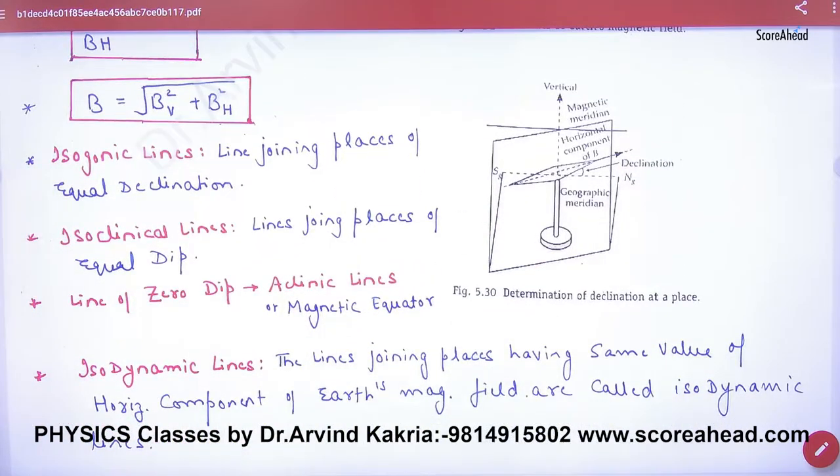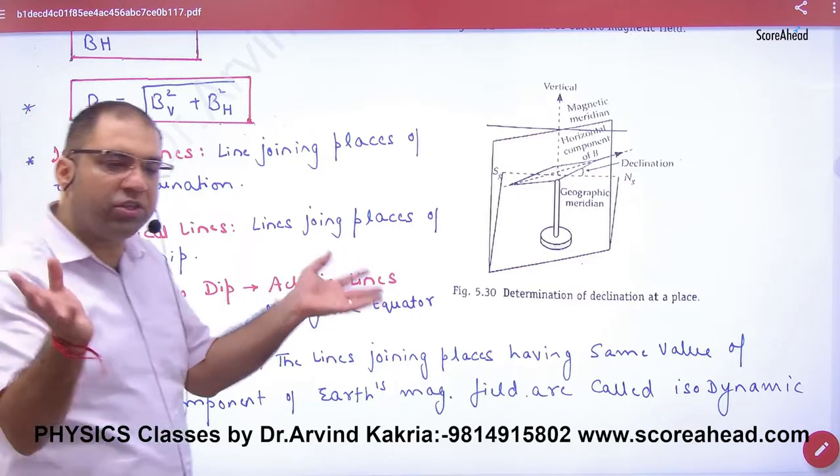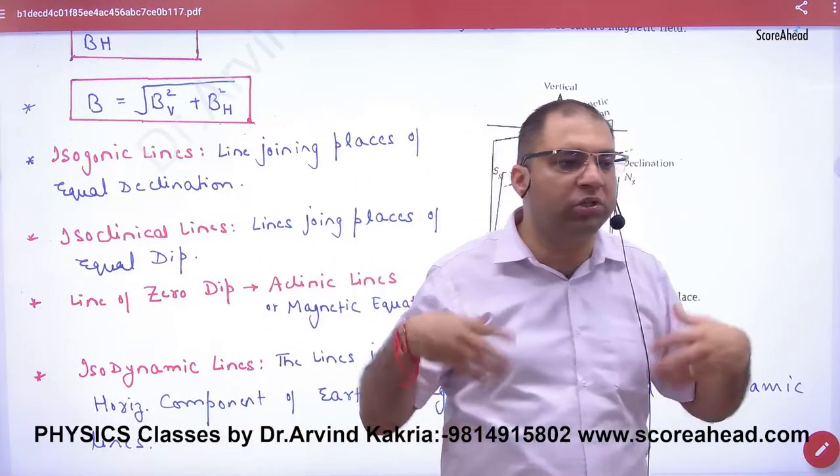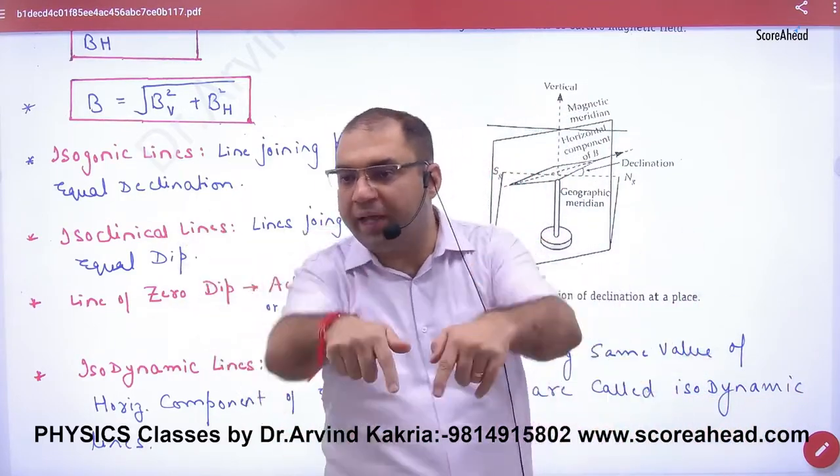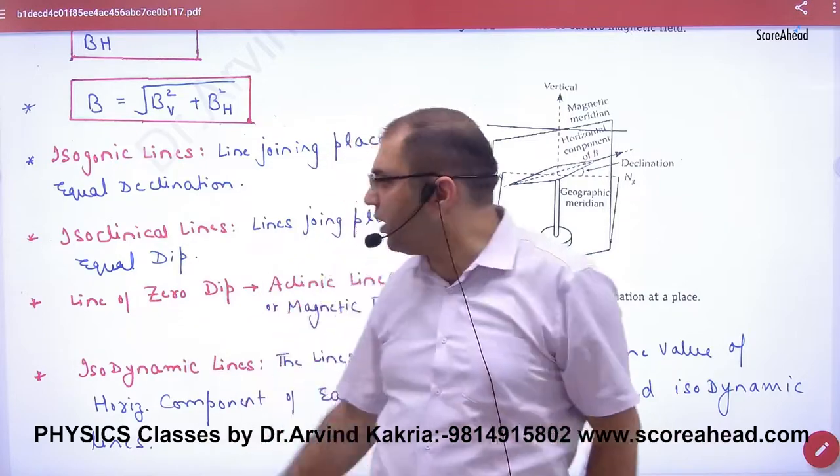Now after this, there are some terms. I have read and written them. The isogonic lines: line joining places of equal declination. Imagine Earth's two or three points where the declination theta is the same.